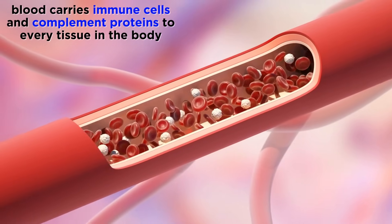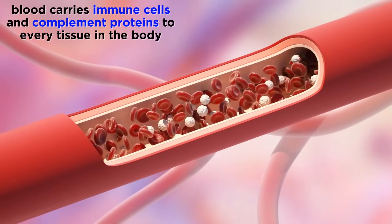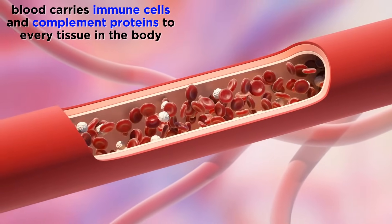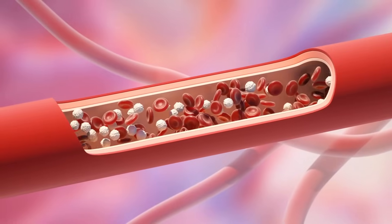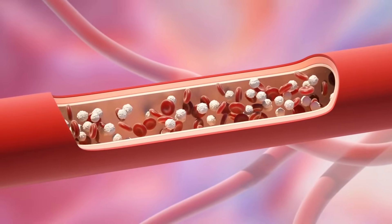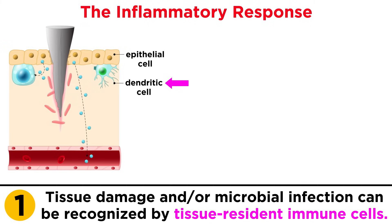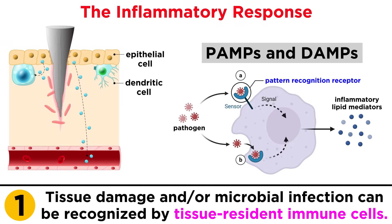The term vascular refers to the blood vessels, which are made up of endothelial cells surrounded by smooth muscle. Since blood vessels permeate every tissue, carrying circulating immune cells and important plasma mediators like complement, the vasculature is a critical player in controlling an infection. The very first step in an inflammatory response is the sensing of tissue damage or microbial infection by tissue resident immune cells, or by the cells that make up a tissue. Pattern recognition receptors can recognize microbial patterns found on infectious microbes called PAMPs, as well as signs of tissue damage that might result from a burn or blunt force trauma, called DAMPs.